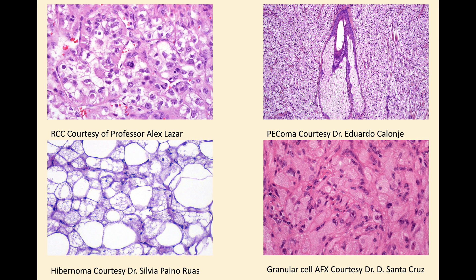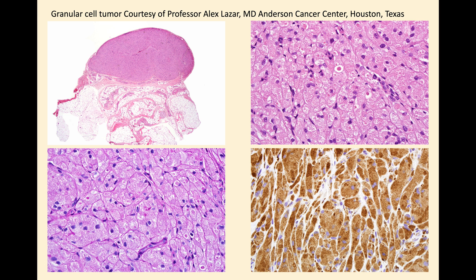This is a case that Alex Lazar shared with me. I don't think it's really a differential diagnosis, but it's always mentioned in the books, so I'll show it just to prove the point. In a granular cell tumor, you almost always see these large eosinophilic distinct hyaline inclusions, which label with diastase PAS, as shown on the bottom left. And just for completeness, that's a CD68 stain.